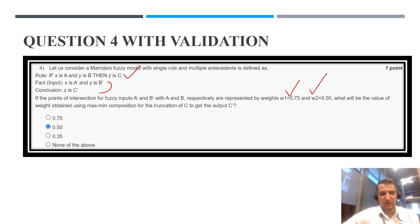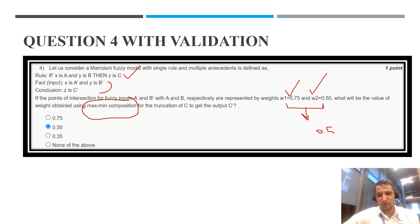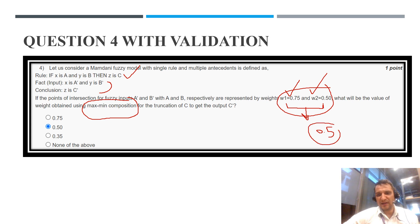We need to find the weight obtained using max-min composition. There are two types of composition: max-min and max-product. For a single rule with multiple antecedents, we take the minimum of the two weights. The minimum is 0.5. Then we take the maximum — since there is only a single value, the correct answer is option B, that is 0.5. If there were another value like 0.6, we would take the maximum of them.